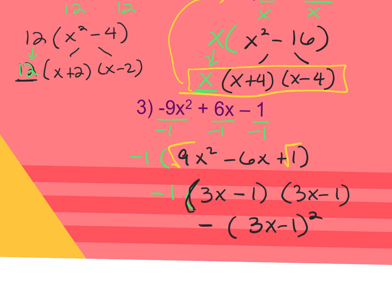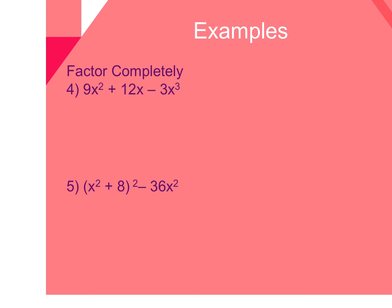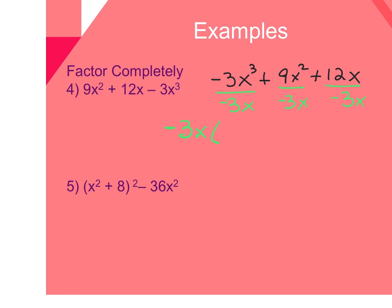For number 4, we can either rearrange it first and put it into standard form, or factor it as-is. I'm going to rearrange it. Standard form is from the largest exponent down to the smallest with the constant last. So I rewrite it as negative 3x cubed plus 9x squared plus 12x. Now I look for my GCF, which is going to be negative 3x — because I want that leading coefficient, that first term, to be positive. After dividing all three terms by negative 3x, what remains is x squared minus 3x minus 4.